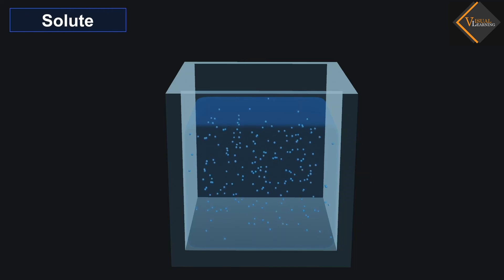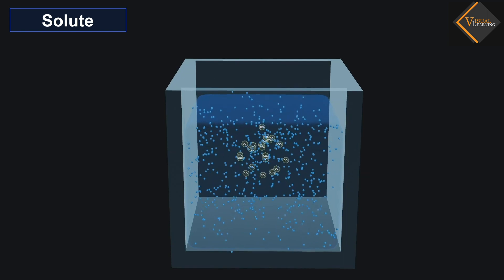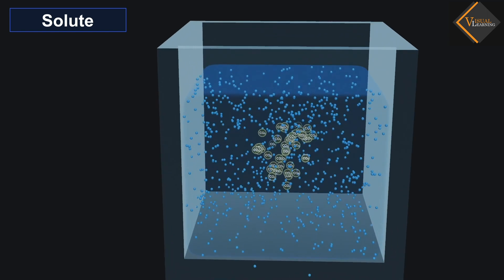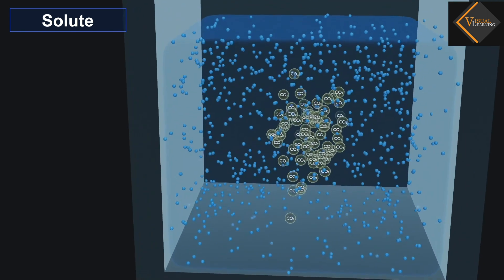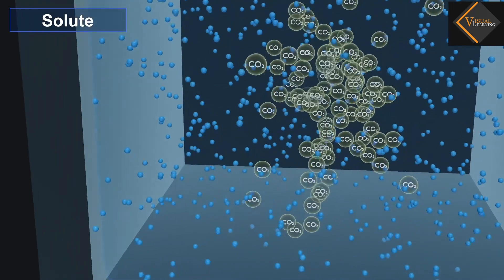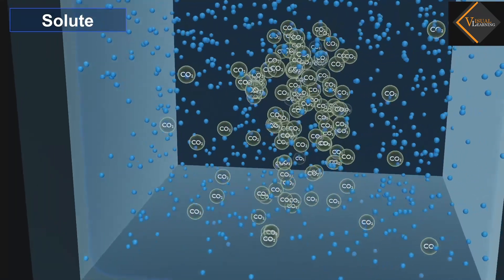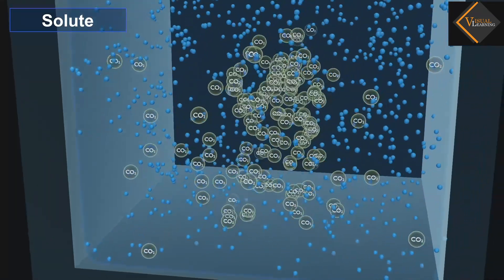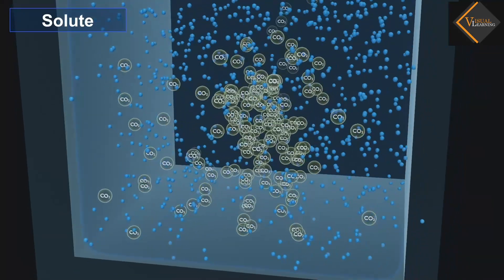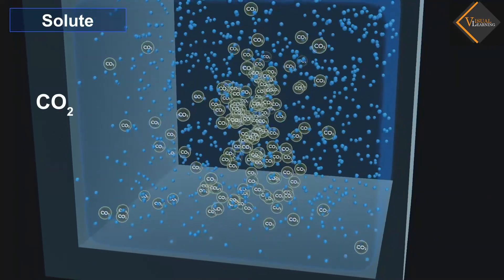Solute: The component of the solution which dissolves in the solvent is called the solute. The solute is the smaller component of the solution. For example, in carbonated drinks, carbon dioxide gas is the solute.